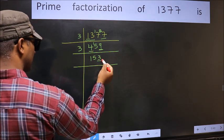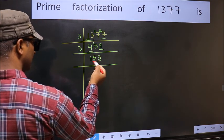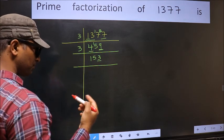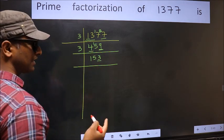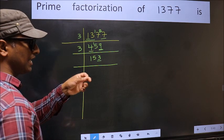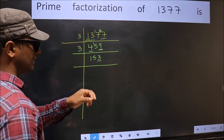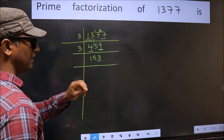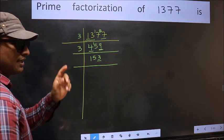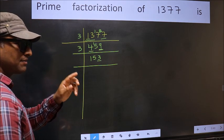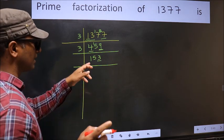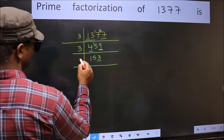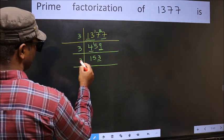Now the last digit is 3, which is not even, so not divisible by 2. To check divisibility by 3, we add the digits: 1 plus 5 plus 5 plus 5 plus 3 gives us 9. 9 is divisible by 3, so this number is also divisible by 3. So take 3 here.